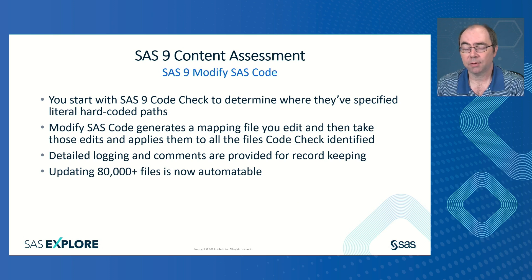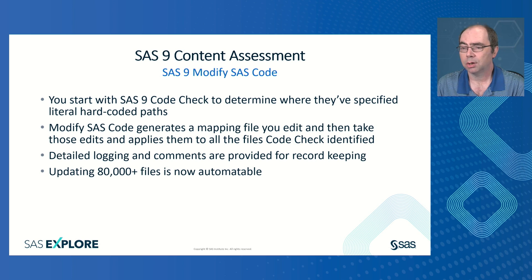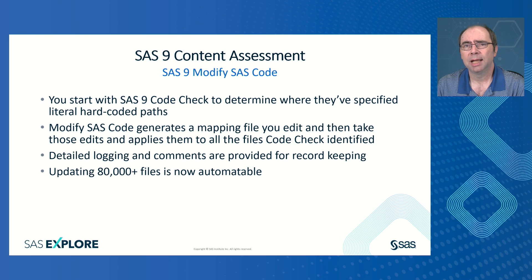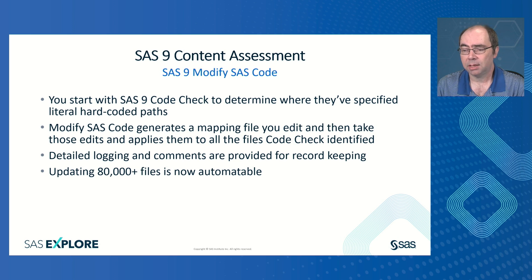To wrap up Modify SAS Code: you start with SAS 9 Code Check, look at the literal hard-coded paths in the report, run Modify SAS Code to generate your map, review it, edit your map, then run Modify SAS Code again to apply your map. I worked with a customer who had 80,000 hard-coded path references across their files, and being able to update those in an automated batch manner was very advantageous — they were quite appreciative.